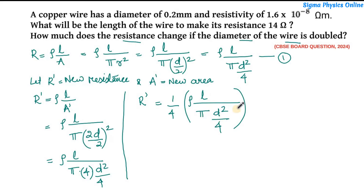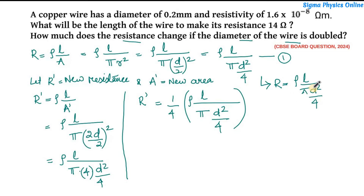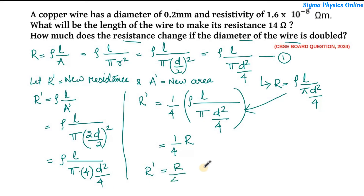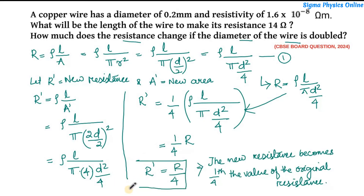Now, ρL/(πd²/4) is nothing but equation 1, which is the original resistance R of the wire. Substituting, we get R' = (1/4) × R, so R' = R/4. The resistance becomes one-fourth of the original if the diameter of the wire is doubled. I hope you have understood the solution to this question.